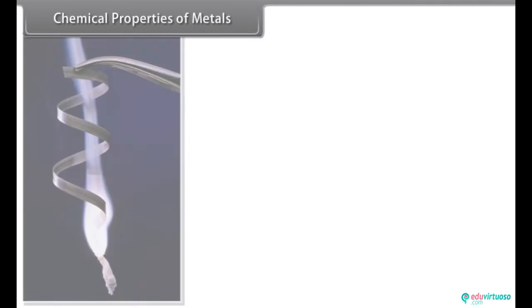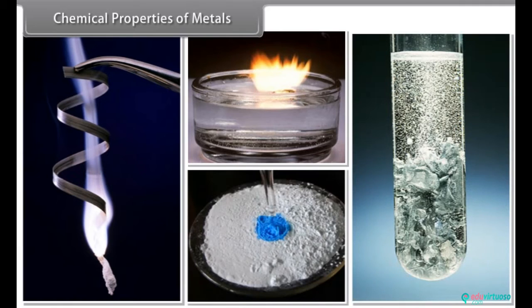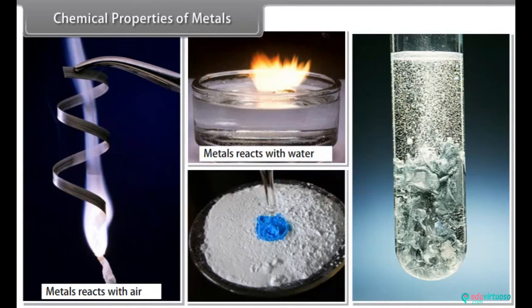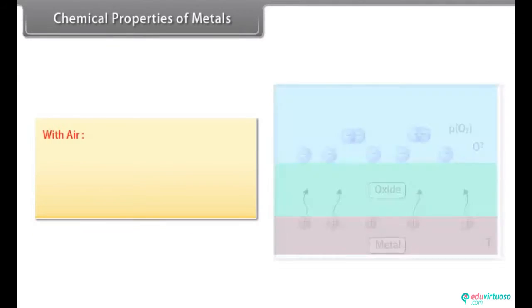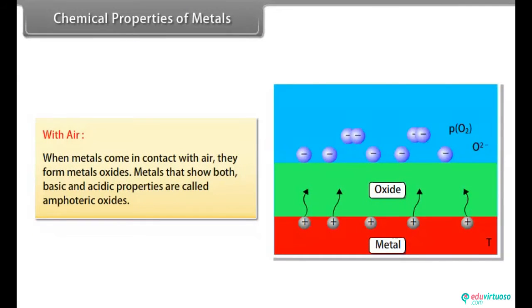Chemical properties of metals. Let us look at some chemical properties of metals. These properties include reactions of metals with other elements, that is, air, water, acids and other metal salts. With air. When metals come in contact with air, they form metal oxides. There are some metals that show both basic and acidic properties. Such metals are called amphoteric oxides.